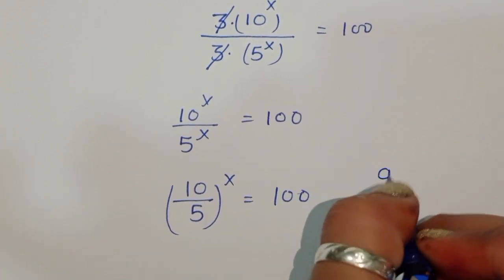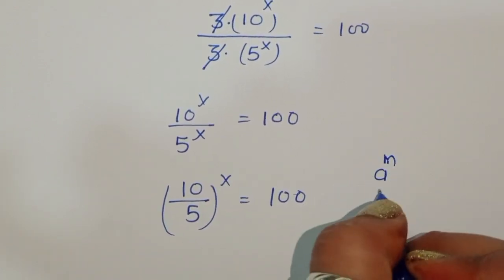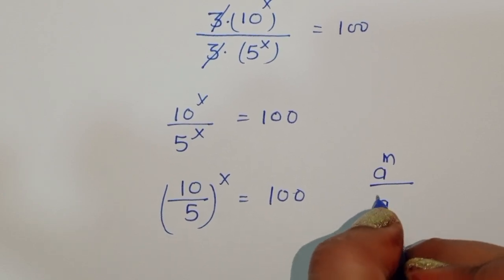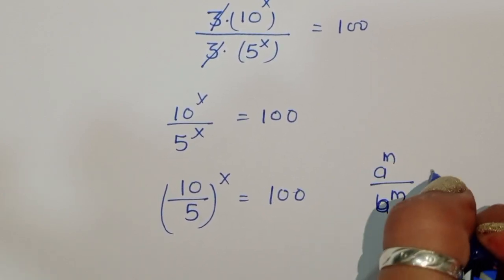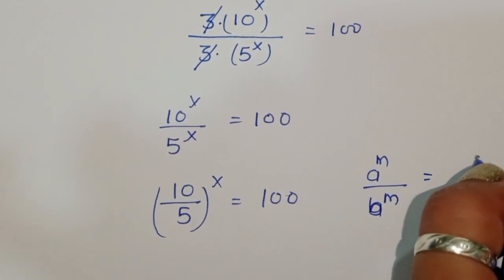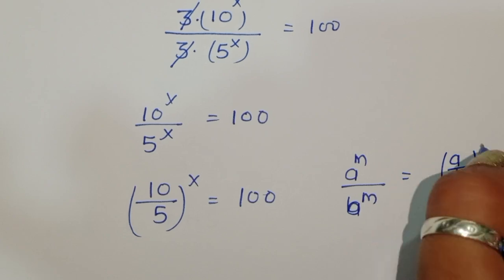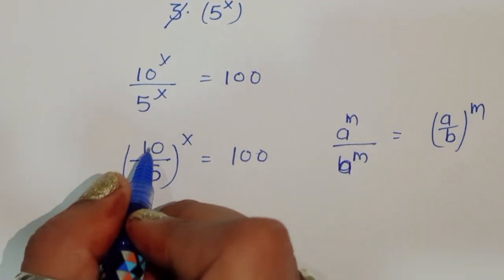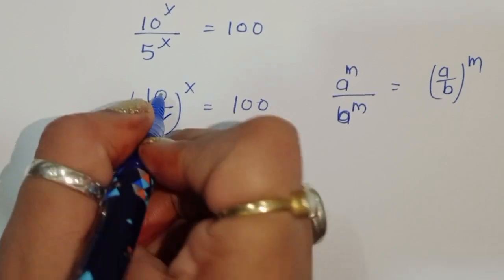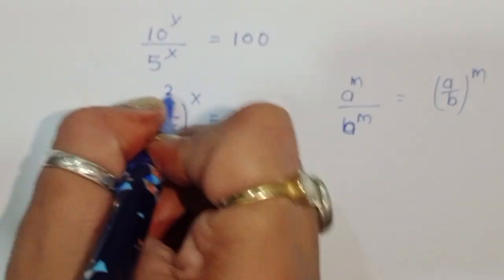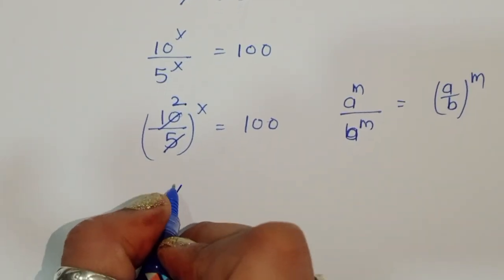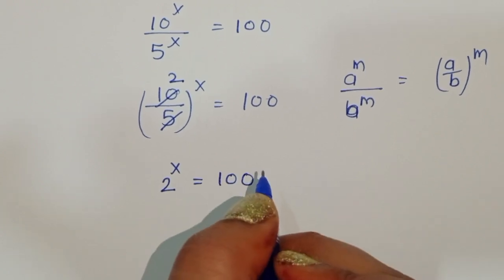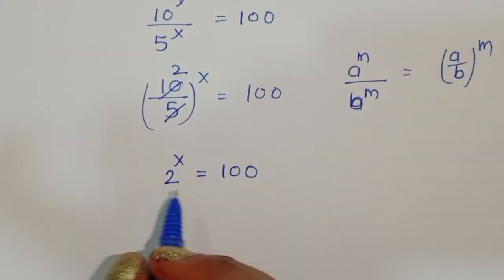We use the formula: a power m divided by b power m equals (a/b) to the whole power m. So 10 upon 5 to the power x gives us 2 power x equal to 100.